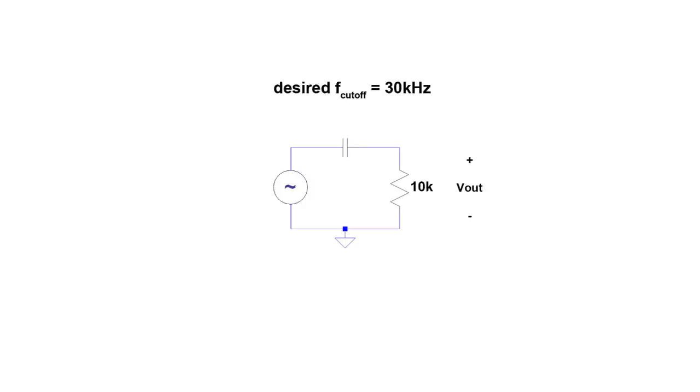Let's start designing the filter by choosing the resistor value. I'm going to choose 10 kOhms, so I only put a light load on the function generator.